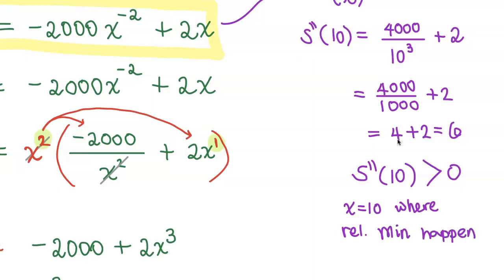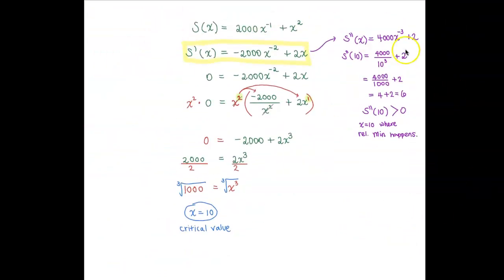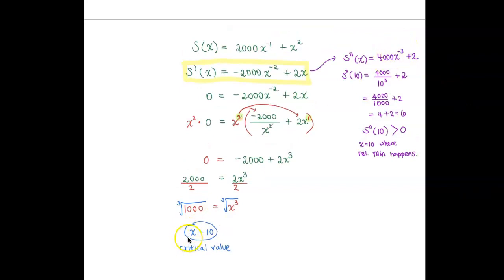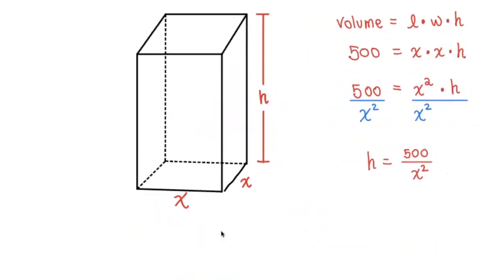So the second derivative test confirms: if you plug in the critical value and the result is positive (greater than 0), we have a relative minimum. x = 10 gives the minimum surface area. Since x is the base side length, the base dimensions are 10 by 10 inches.